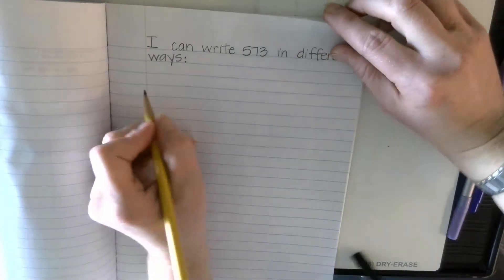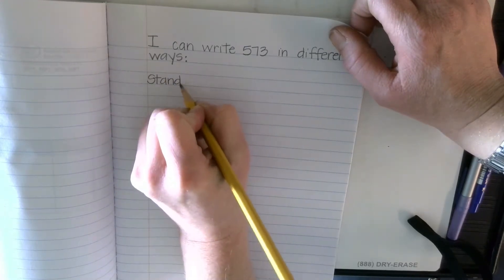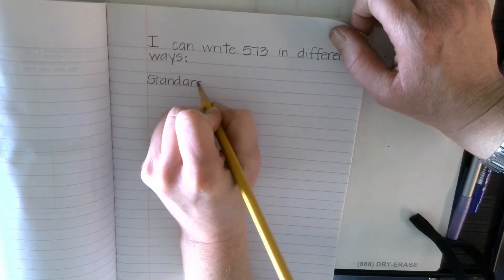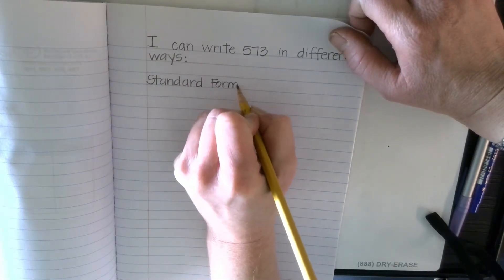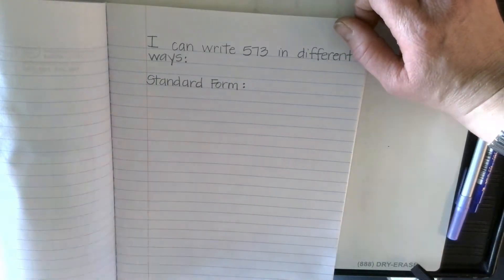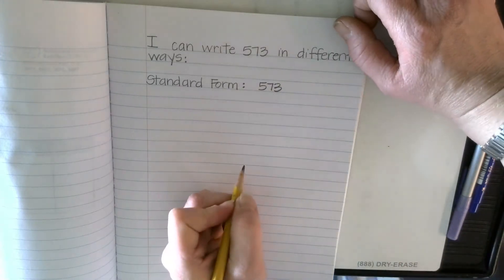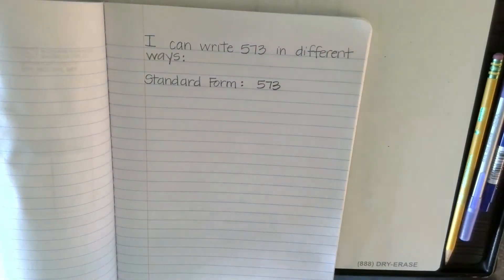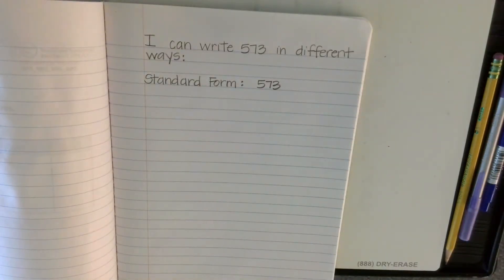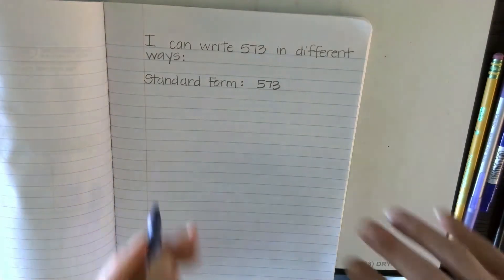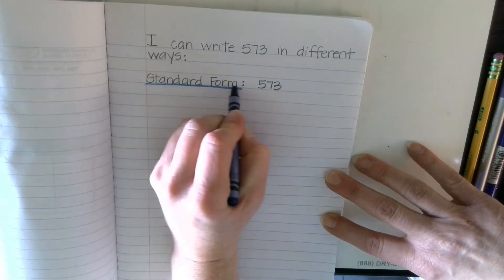And I'm going to write standard form. And we know that when we write it in standard form, we just write it with digits. And then I'm going to underline standard form just lightly with a blue, just give it a little bit of color. So standard form is 573.